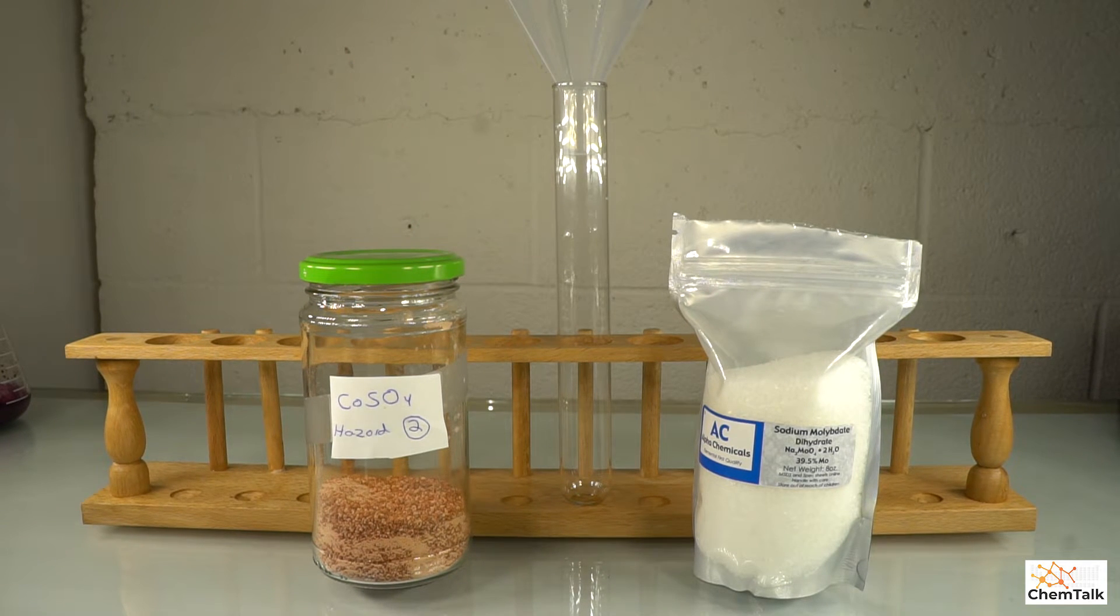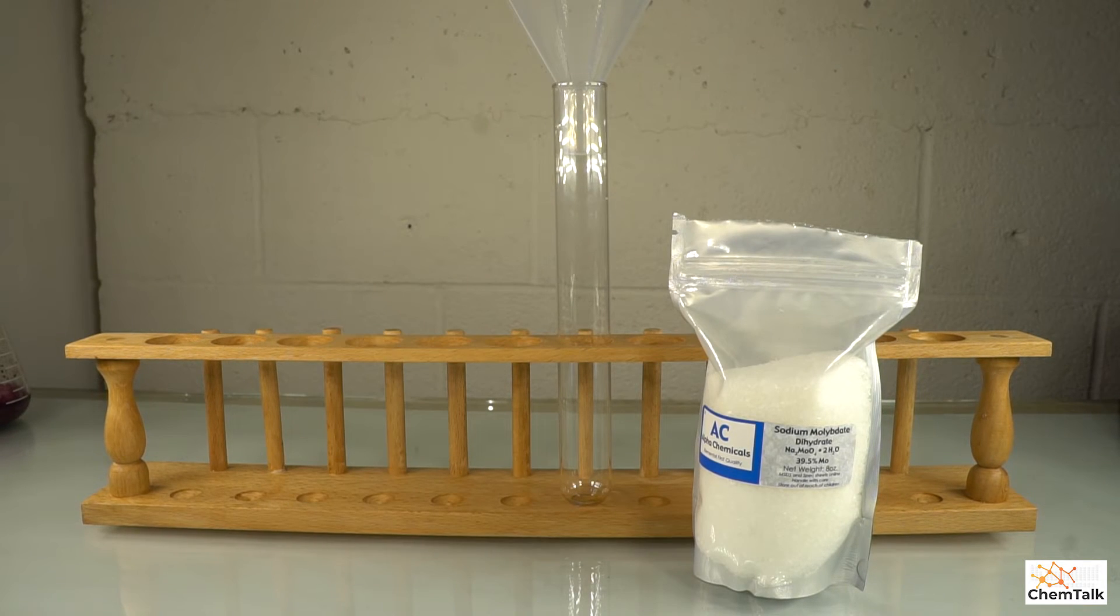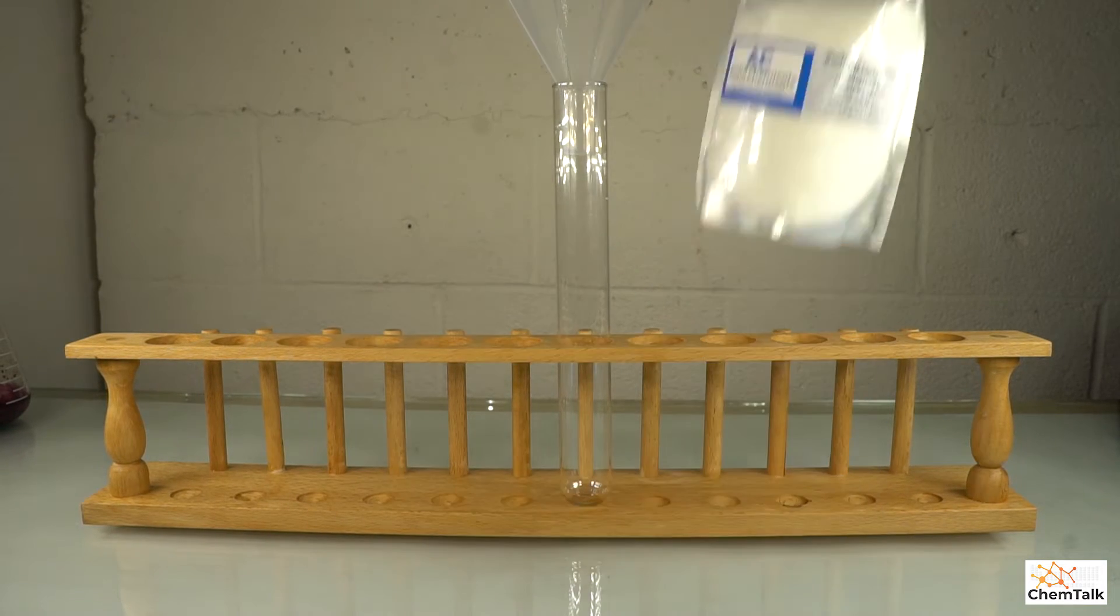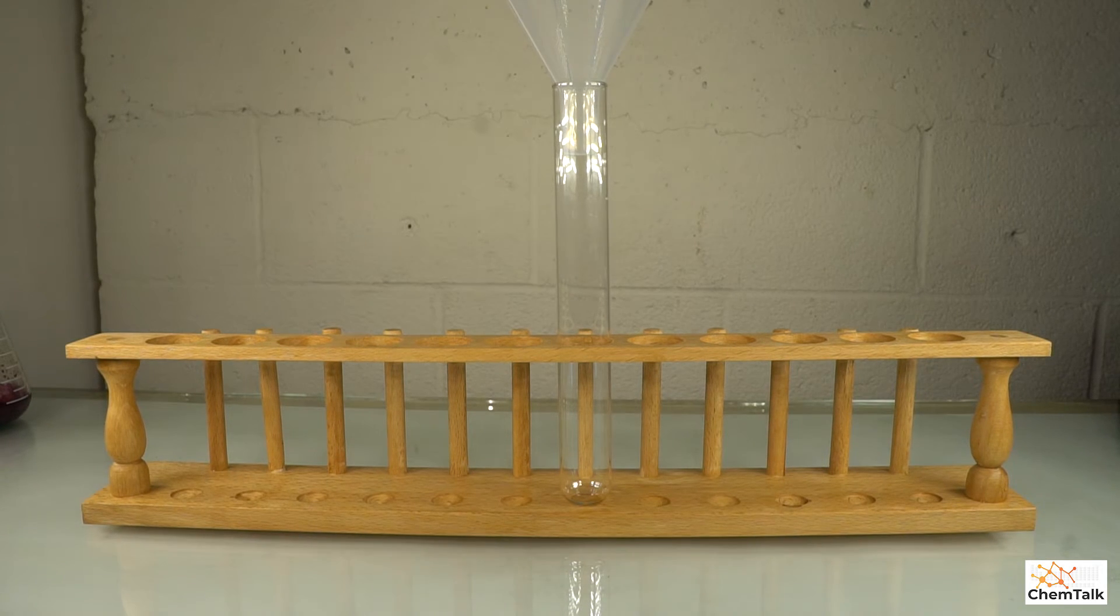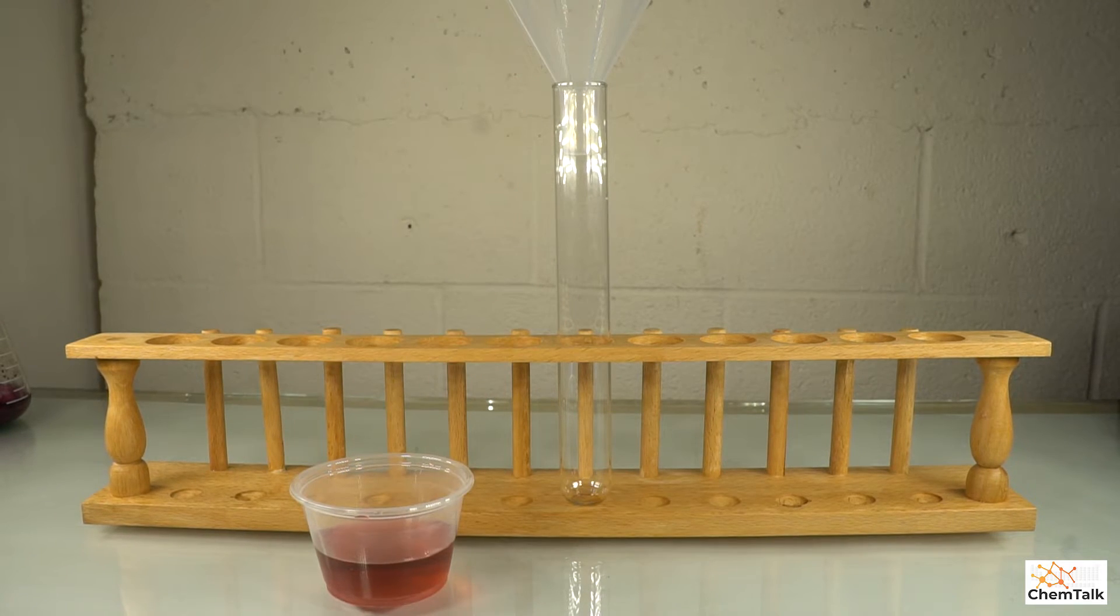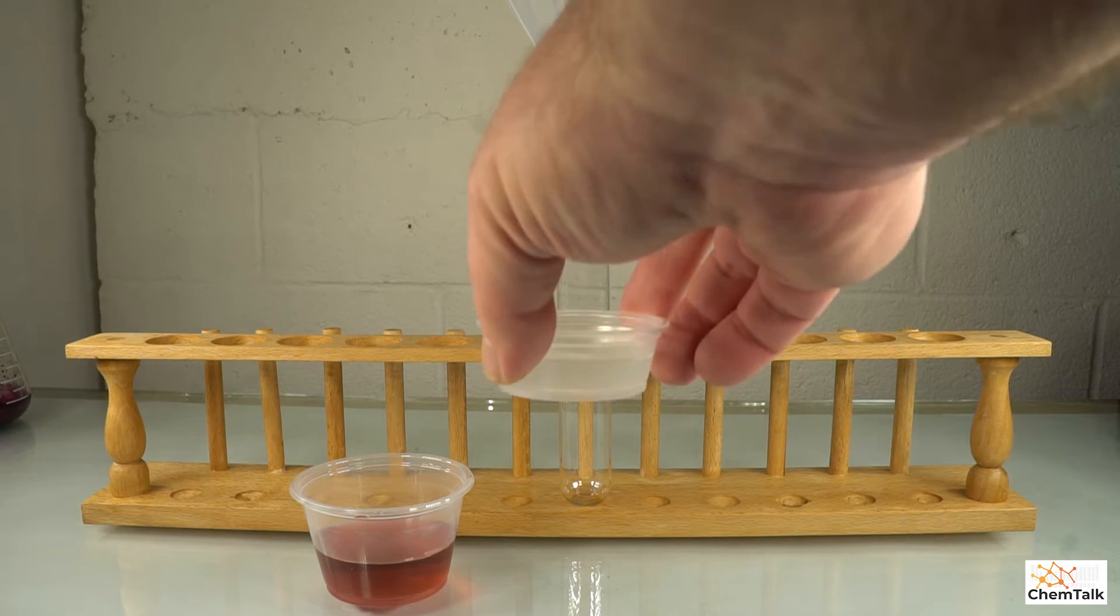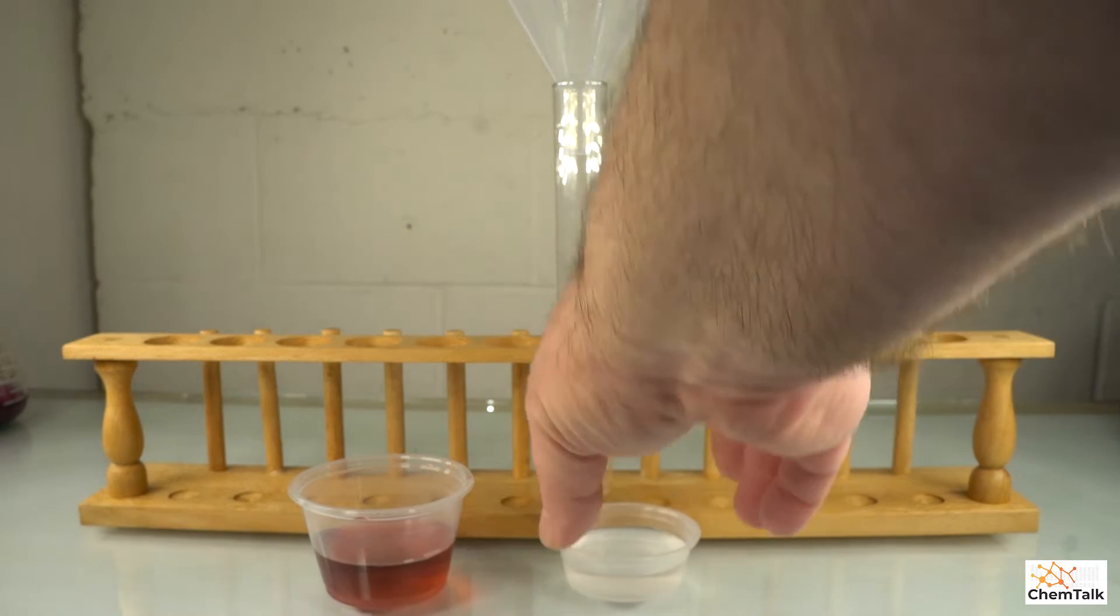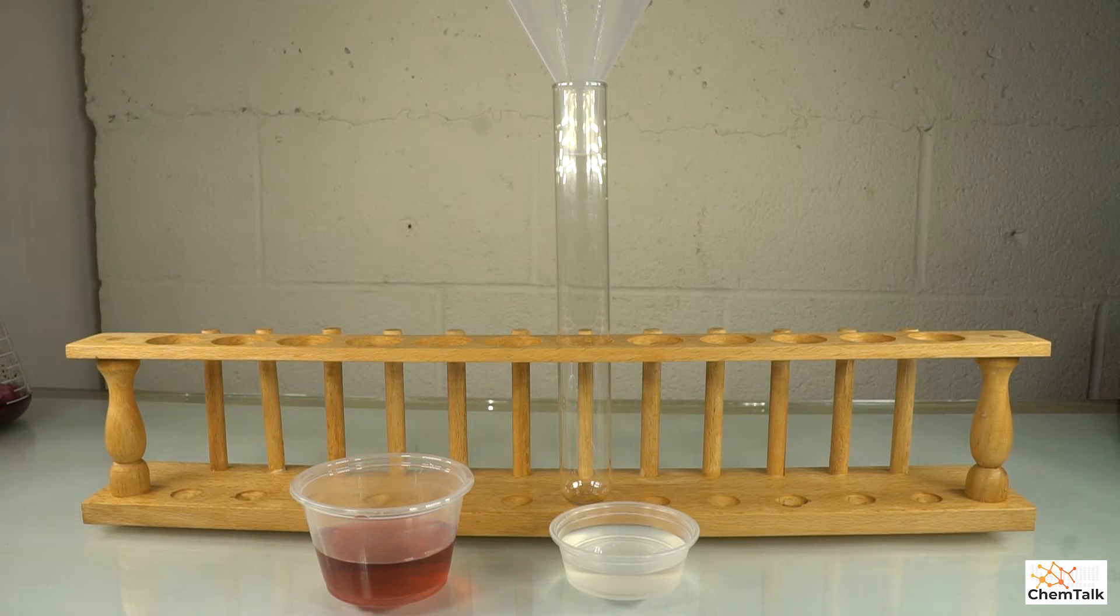So I'm going to move these out of the way, and I did the pleasure of pre-mixing some solutions. So in this clear container, I mixed four and a half grams of sodium molybdate with 20 milliliters of water.